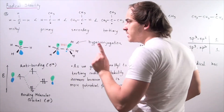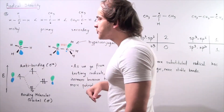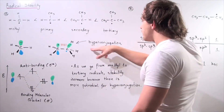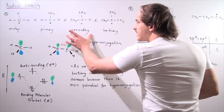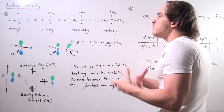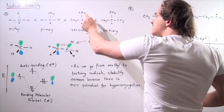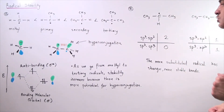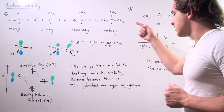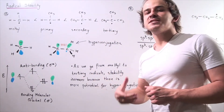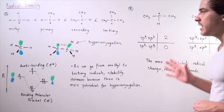Stability increases because, looking at methyl, there are no carbon atoms to participate in this stabilizing hyperconjugation effect. As we go from primary to secondary, and secondary to tertiary, we have more hyperconjugation taking place because we have more methyl groups attached to our central carbon. So as we go from methyl to tertiary radicals, stability increases because there is more potential for hyperconjugation to take place.